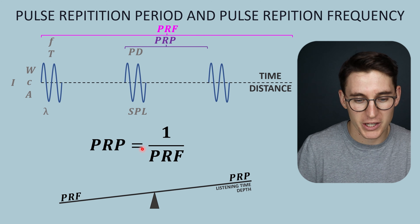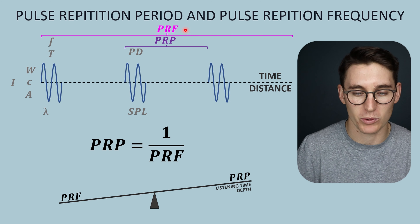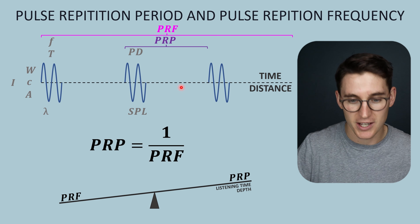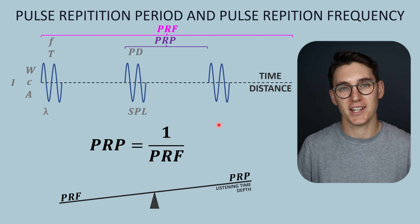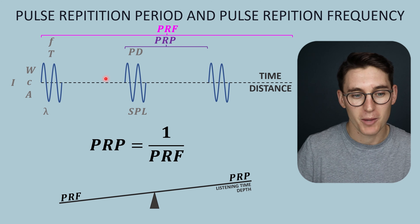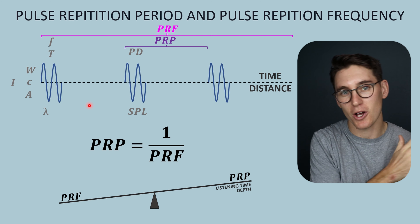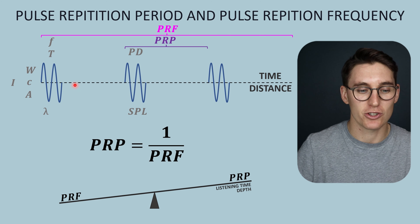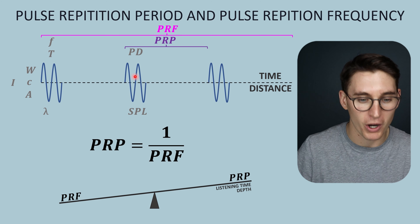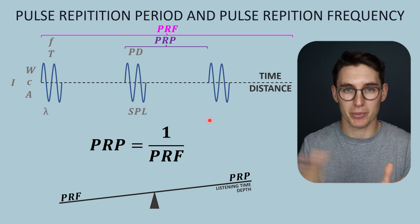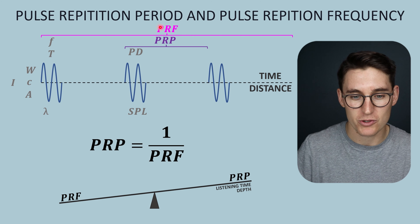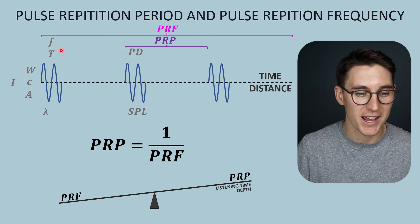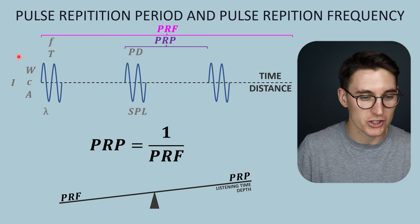The pulse repetition period is inversely proportional to what is known as the pulse repetition frequency. The pulse repetition frequency determines the number of pulses we can fit in one second — much like frequency was the number of waves passing a particular point in a set period of time, the pulse repetition frequency is the number of pulses passing a particular point in a period of time. Don't get confused between pulse repetition frequency and the frequency of our wave, or between pulse repetition period and the period of our wave.